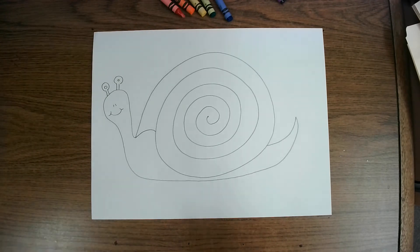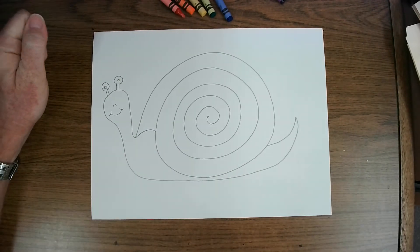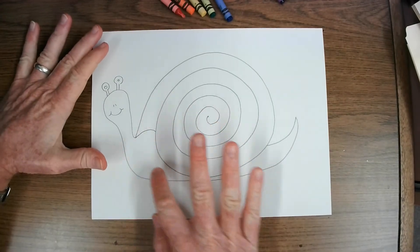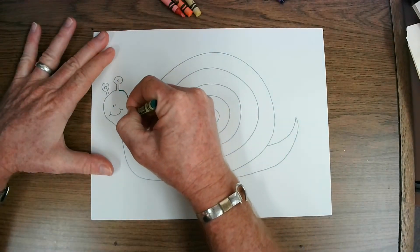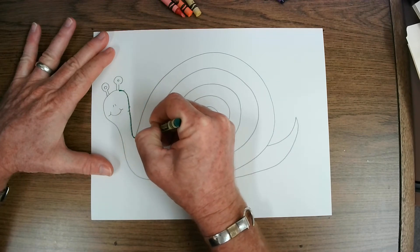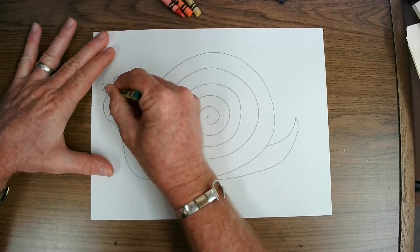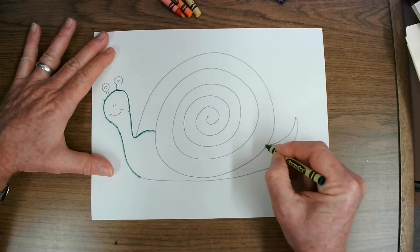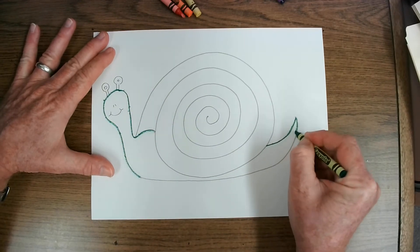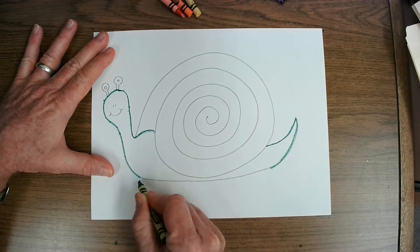After you draw your snail's shell and the body, what I want you to do is get a crayon and trace over all of your pencil lines. I can use green for the snail's body. And we're just covering up all of these pencil lines. I like to start every drawing with pencil because you can erase pencil and you cannot erase markers or crayons. So we never draw with markers or crayon first because if we make a mistake, we're not able to fix it.